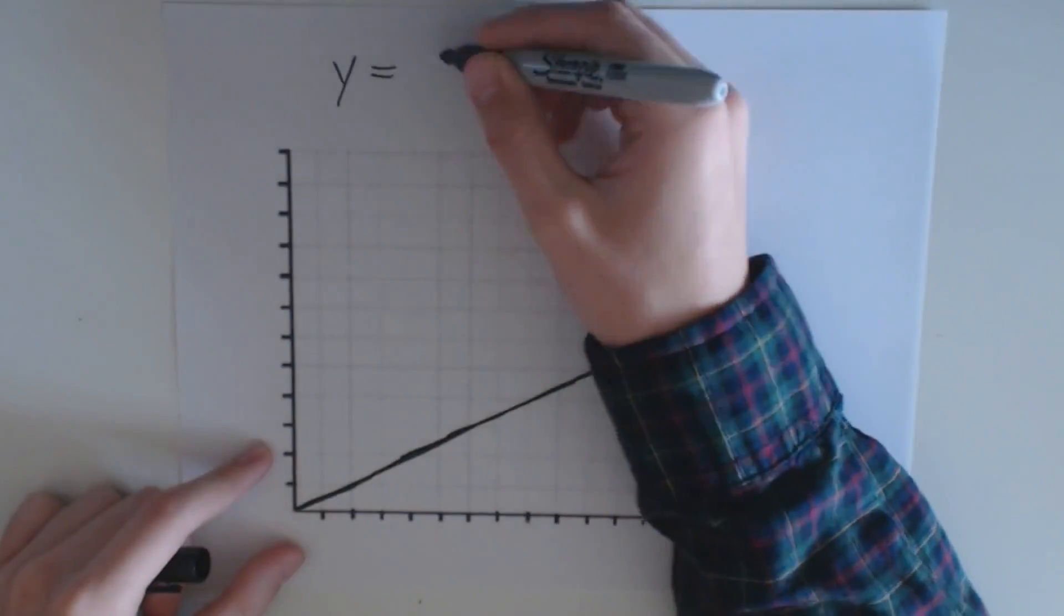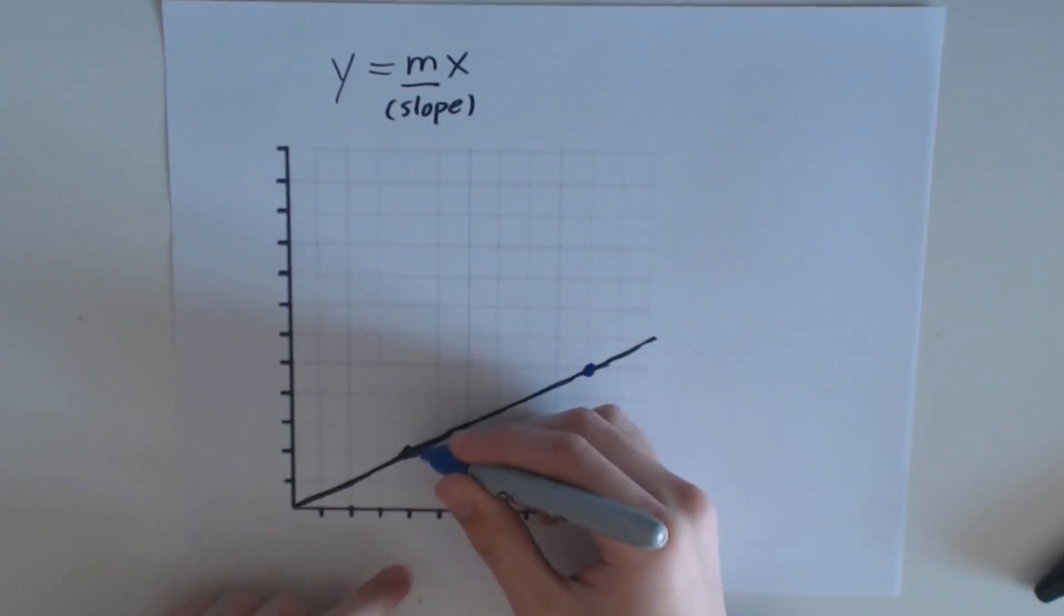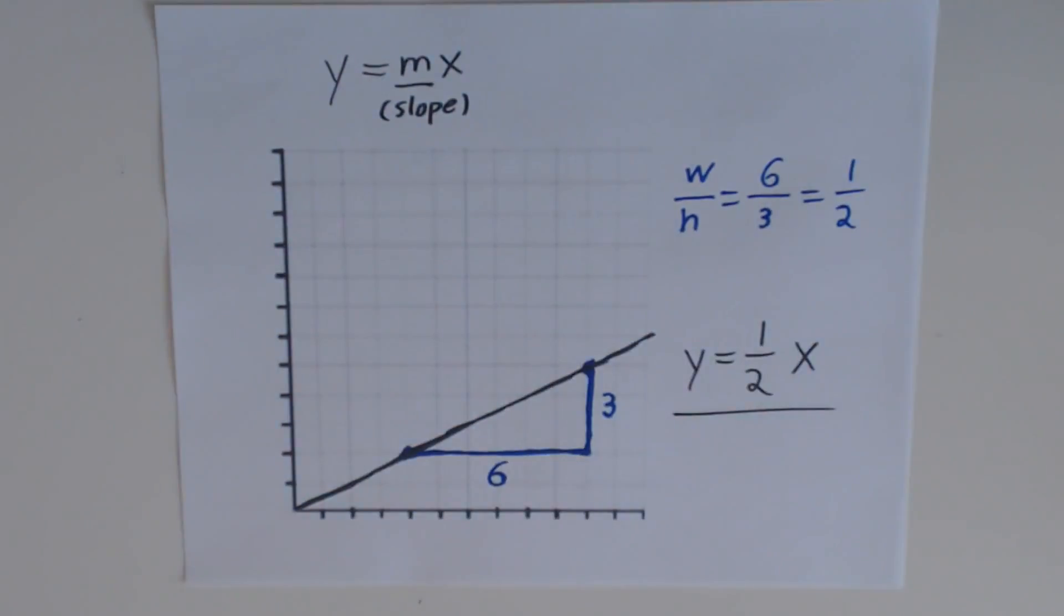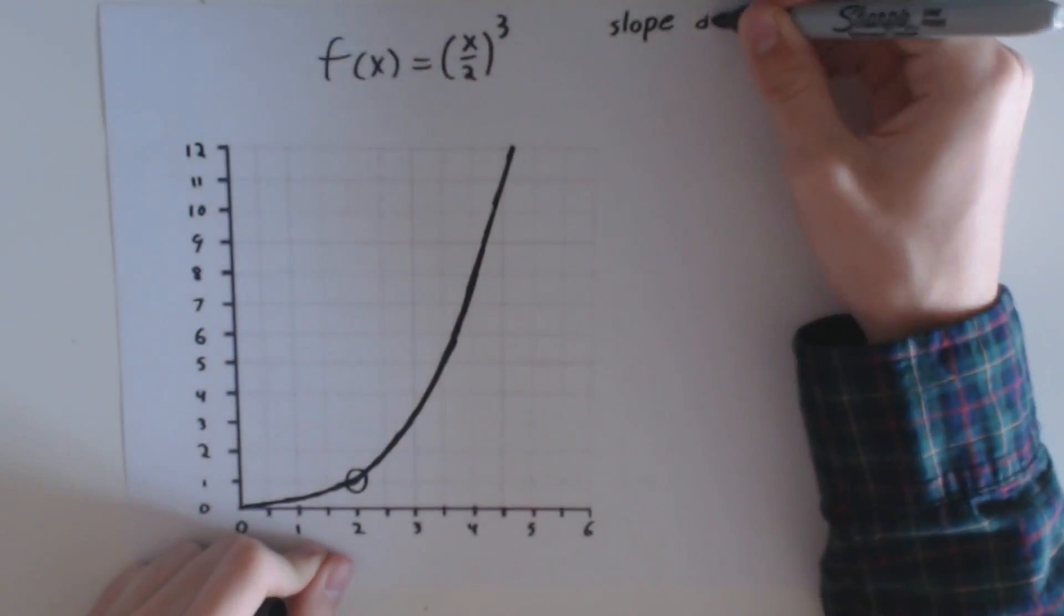Let's say you have a graph and you wanted to find the slope. For linear graphs like this one, it's pretty easy. Draw a triangle connecting any two points and divide the height by the width. But what about when our graph is curved and we want to find the slope at a specific point?